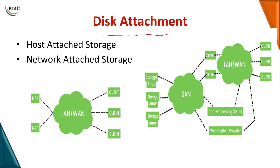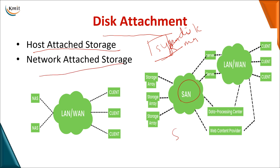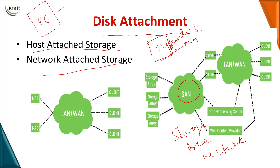Disk attachment refers to how secondary storage devices are connected to a system. There are three architectures: host-attached storage, network-attached storage, and storage area network. In host-attached storage, you connect a pen drive or USB drive directly to a PC or laptop to transfer data from one system to another — that is why it is called host-attached.